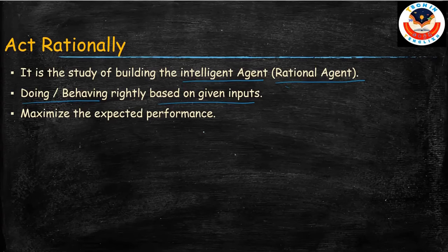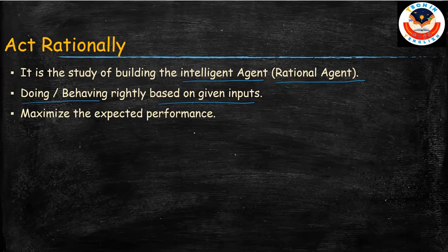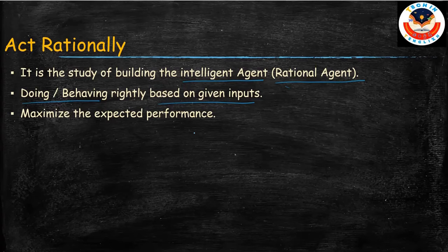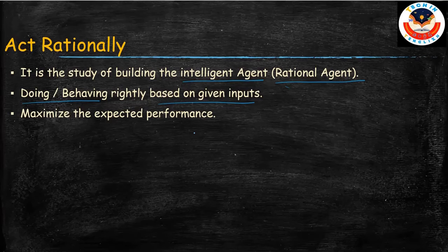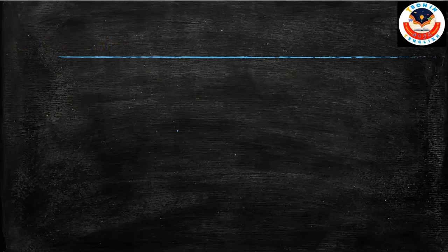For example, consider a self-driving car. We calculate its performance by how well it moves on the roads, whether it reaches the destination on time, and whether it takes the shortest path from one place to another when there are different routes available. Maximizing this expected performance is what acting rationally is about.